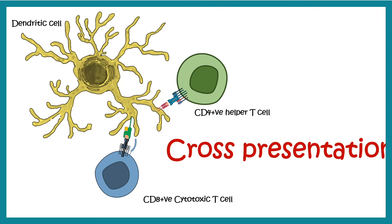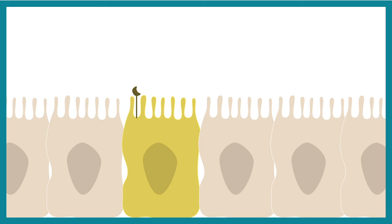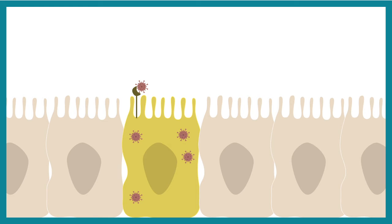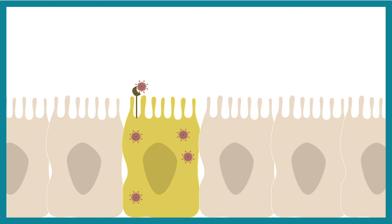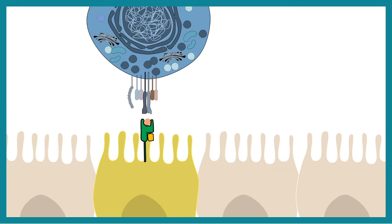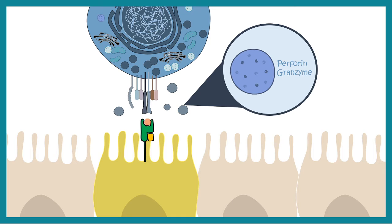Once CD8-positive T cells are activated, they are no longer naive. In their activated form they undergo several changes and engage to kill the pathogen or the cell affected by it. Cytotoxic T cells play a major role against intracellular pathogens such as viruses or specific intracellular bacteria. For example, virus-infected cells, marked in yellow, display viral proteins on top of their class 1 MHC molecules, which are then presented to cytotoxic T cells.